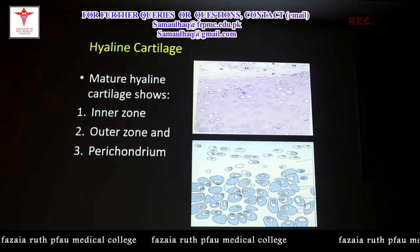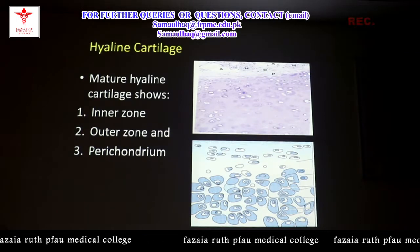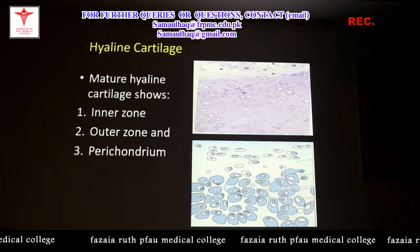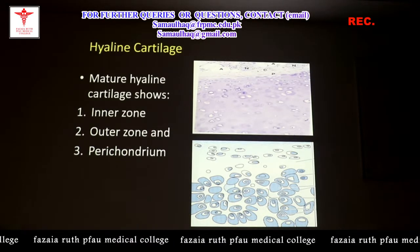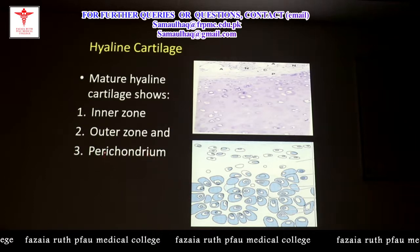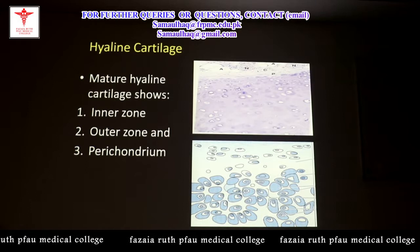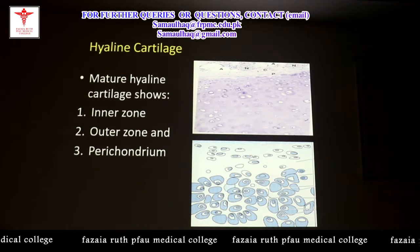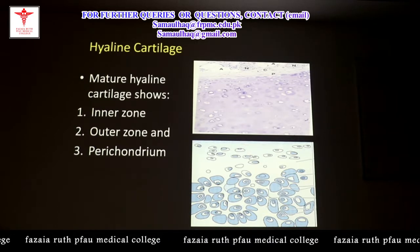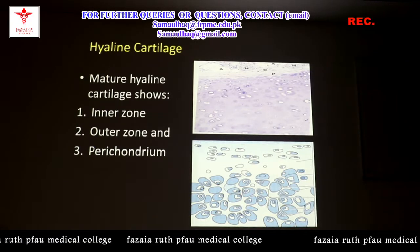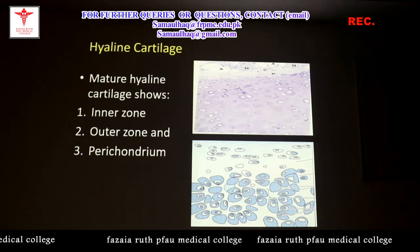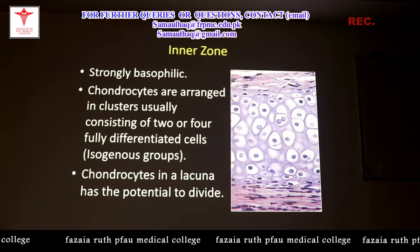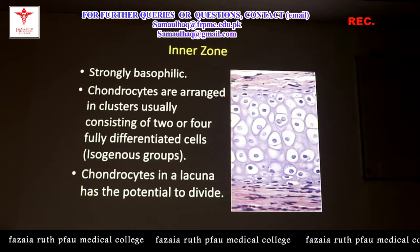Starting with hyaline cartilage: when we see a mature hyaline cartilage which is fully developed, we see three different zones. There is an inner zone, an outer zone, and the most outer layer is the perichondrium — the connective tissue covering of the cartilage. 'Peri' means around and 'chondrium' means cartilage, so perichondrium means around the cartilage.